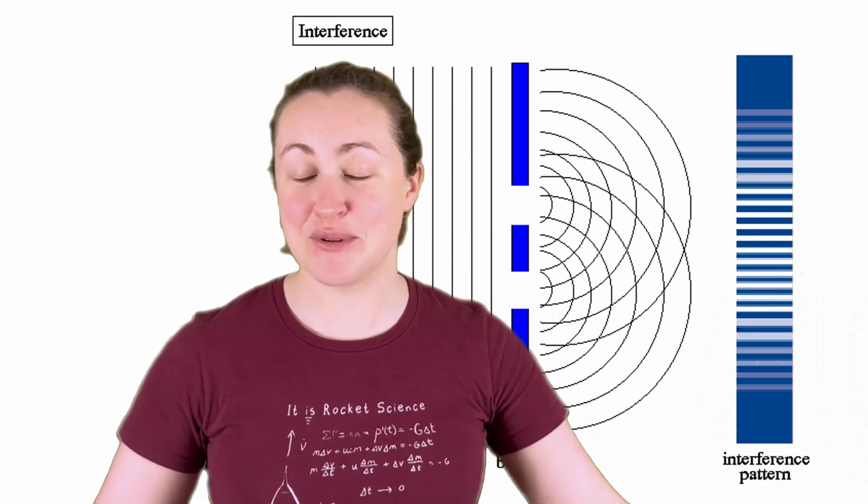So what happens when you do this with light? You can perform this experiment at home and you'll see the interference pattern of a wave model. And that appeared to be the end of that. Light was a wave. But a hundred years later, Einstein was like, no, light is made of particles called photons.